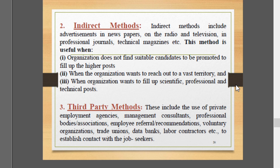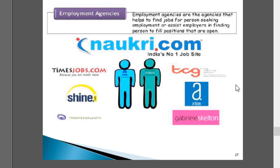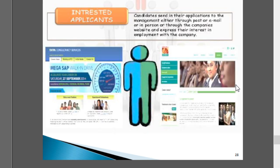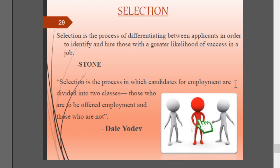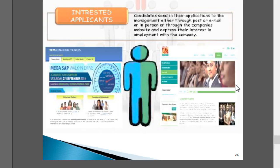The third party method includes the use of private employment agencies, management consultants, professional bodies or associations, employee references and recommendations, voluntary organizations, trade unions, data banks, labor contractors, etc., to establish contact with job seekers. These portals help provide a pool of suitable candidates for the organization's requirement. Examples include job portals such as naukri.com. We will stop here, and the next part — selection — will continue in the next session.